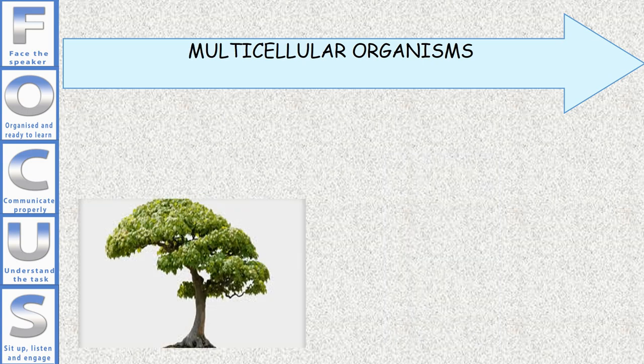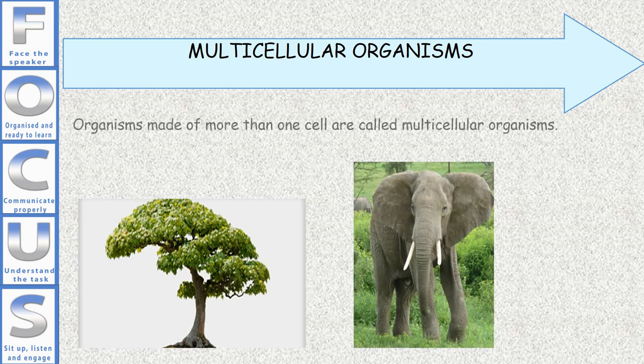Multicellular organisms. Organisms made of more than one cell are called multicellular organisms. For example: human, cow, rabbit, and tree.